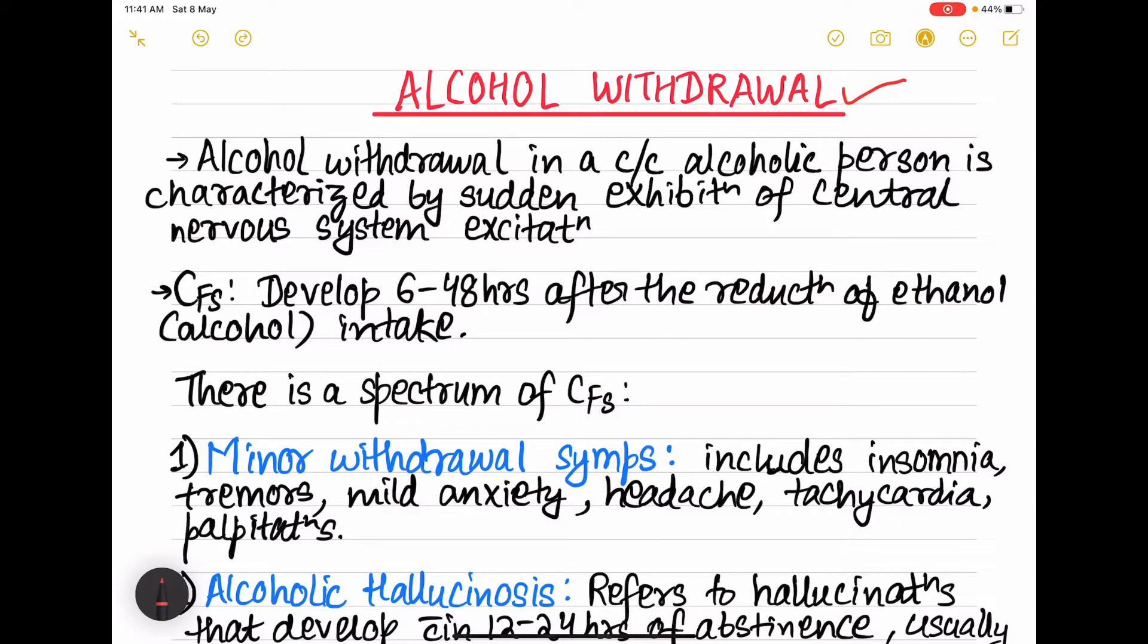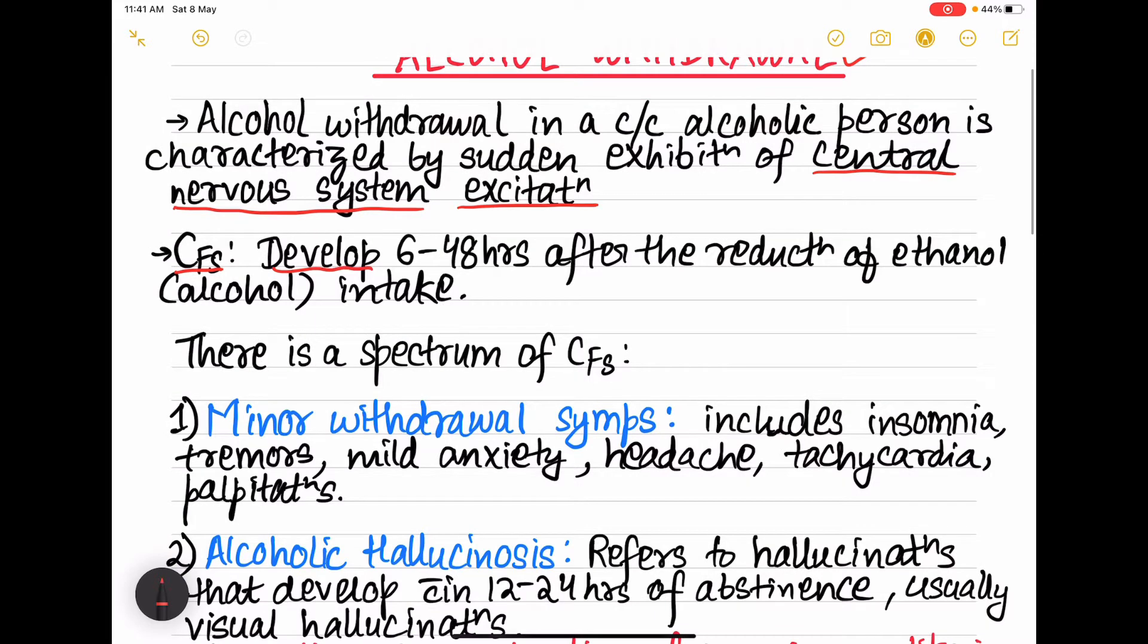Alcohol withdrawal in a chronic alcoholic person is characterized by sudden exhibition of central nervous system excitation. The clinical features develop usually 6 to 48 hours after the reduction of ethanol intake, that is alcohol intake.